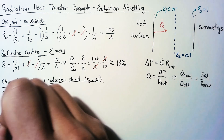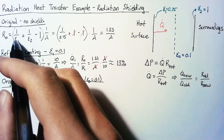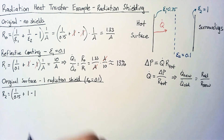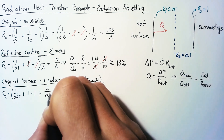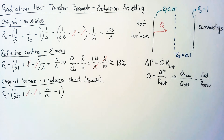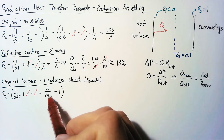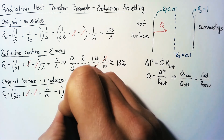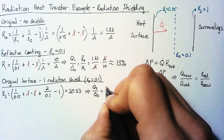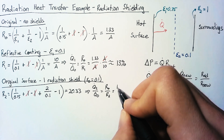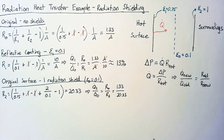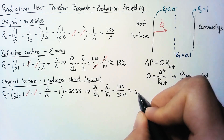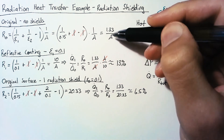Our R2 is going to be (1/0.75 + 1 − 1) times (1/A) for the surfaces, plus the shield contribution from the formula 2n/ε − n. With n equal to 1, that gives 2/0.1 − 1, which equals 20 − 1 = 19, but combining everything: 1.33 + 20 − 1 = 20.33. So R2 = 20.33/A. Then q-dot 2 / q-dot 0 = 1.33 / 20.33, which gives about 6.5% of our original heat transfer.